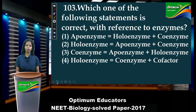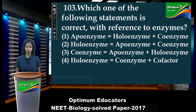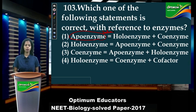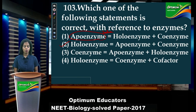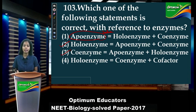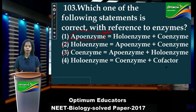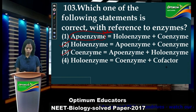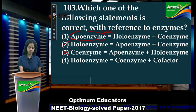Question 103: 'Which one of the following statements is correct with reference to enzymes?' Apoenzyme is the inactive enzyme. Holoenzyme is the enzyme activated only when apoenzyme and coenzyme are together — so holoenzyme is a combination of apoenzyme and coenzyme. Coenzyme is a non-proteinaceous substance that supports metabolism. Cofactor is any chemical that initiates, accelerates, or makes the process efficient. The correct answer is option 2.